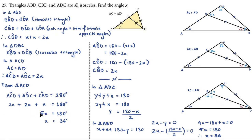For the third method, we use two variables. The base angles of isosceles triangle ABD are both X as given. Let the base angles of isosceles triangle BCD each equal Y. Since triangle BCD is isosceles, both angles at the base are Y. Then, since triangle ACD is also isosceles with AC equal to AD, both its base angles must also equal Y.